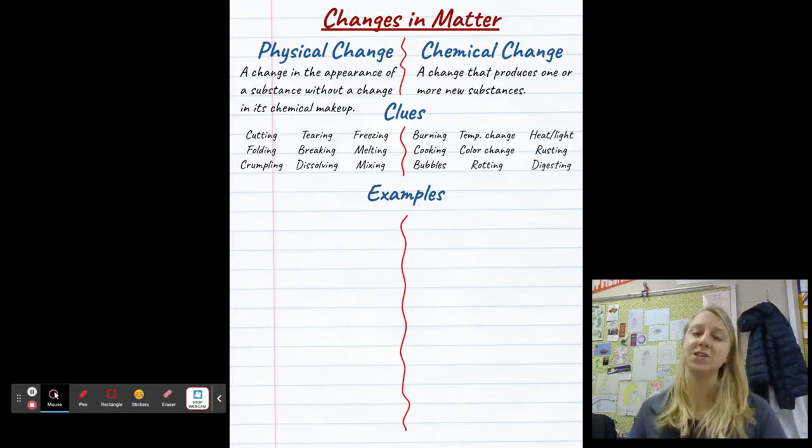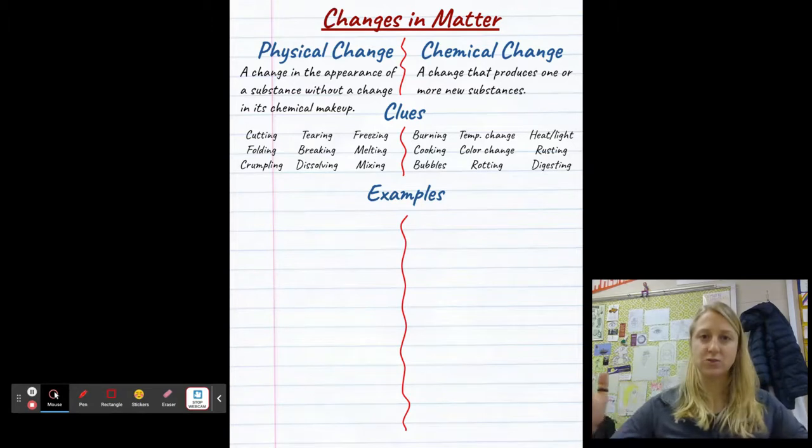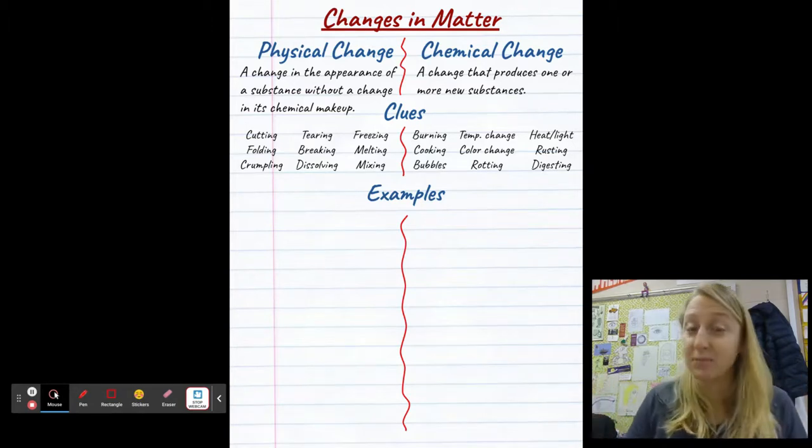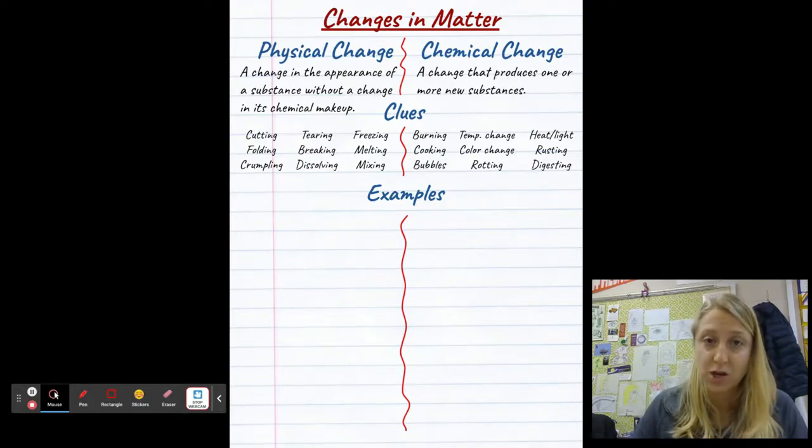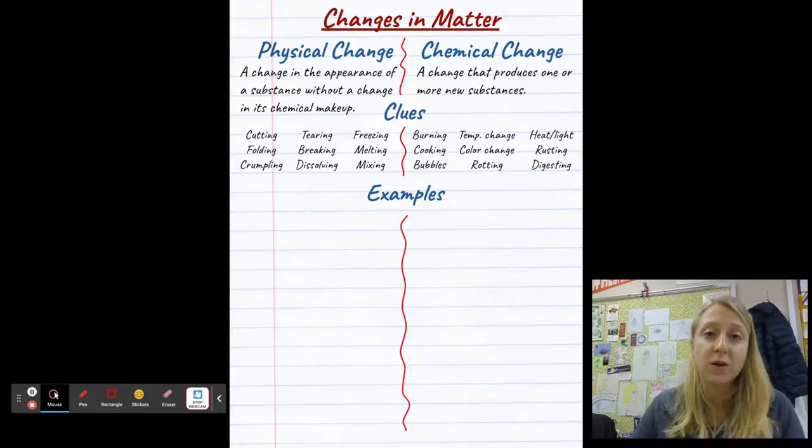And finally, digesting. So you eat food, it makes its way through you. You probably know that most of the time, it looks different on the other end, right? So digesting is another great example of a chemical change. I'm going to stop this video here, and we'll pick up with examples in the next video.